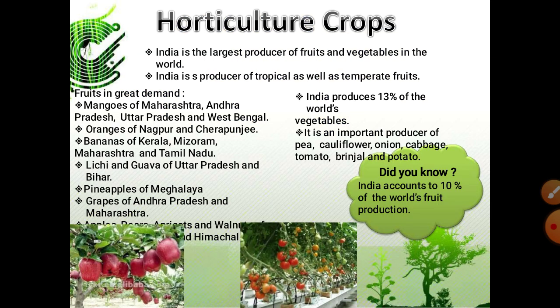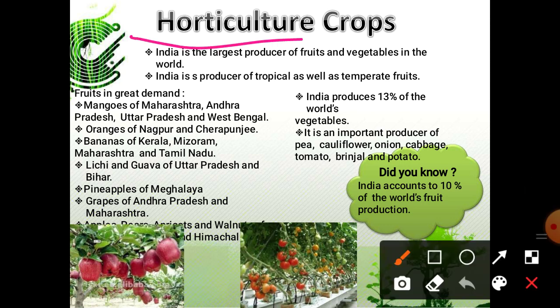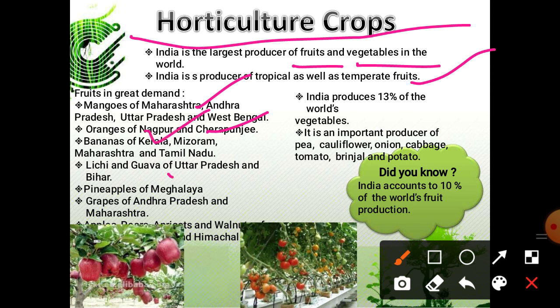Next are horticulture crops, which are also a kind of plantation. Horticulture especially involves large production of fruits and vegetables. India produces both tropical and temperate fruits. Fruits in great demand include mango from Maharashtra, Andhra Pradesh and Uttar Pradesh; orange from Nagpur and Chirapunji; banana from Kerala; lychee and guava from UP and Bihar; pineapple from Meghalaya; and grapes from Andhra Pradesh and Maharashtra. India is also an important producer of peas, cauliflower, onion, cabbage, tomatoes, brinjal and potatoes.